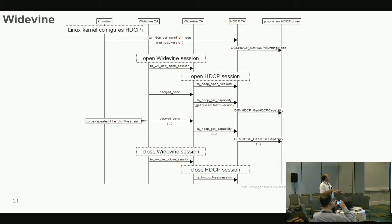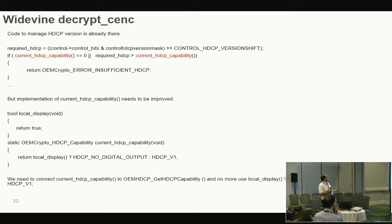For the Widevine integration: Widevine calls open session, then during decryption a few lines of code are added to call get_capabilities and block decryption if something is wrong, and at the end close session also closes the HDCP session. At the source code level, most of this is almost already there — there are checks to get the HDCP version from the stream and verify that the supported version is at least as high as what is required for the current connection.